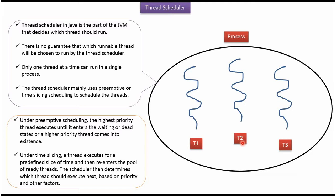At a time only one thread can run in a single process. Thread Scheduler mainly uses preemptive or time slicing scheduling to schedule the threads.